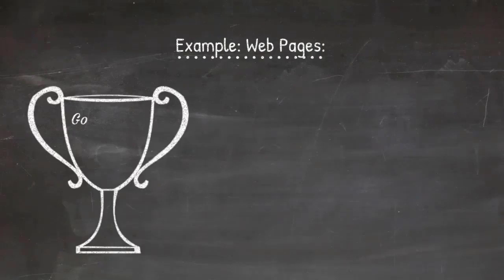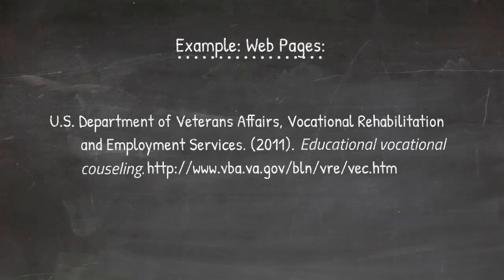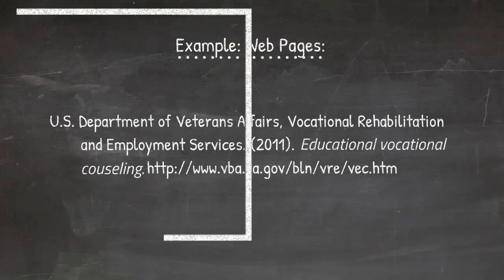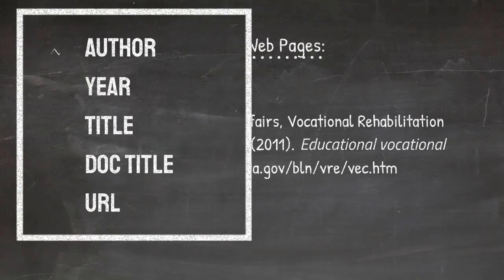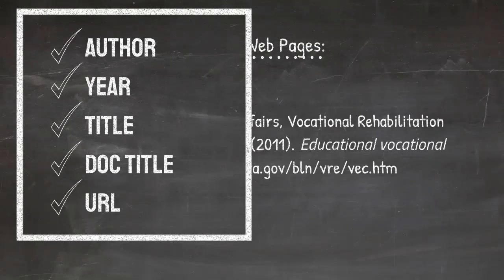For citing web pages, which is increasingly common, the APA style manual is better about guidance this time around — APA 6 was a bit vague. The same basic approach applies: author or authors, date, title of the work — a document title or description can be added — and then the URL address. So it's very similar to the journal article example.